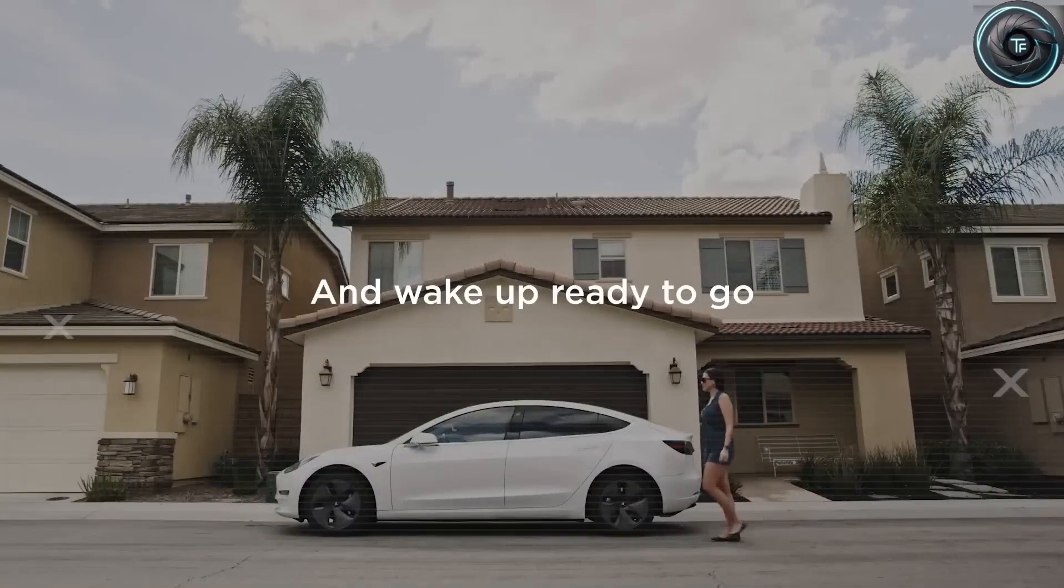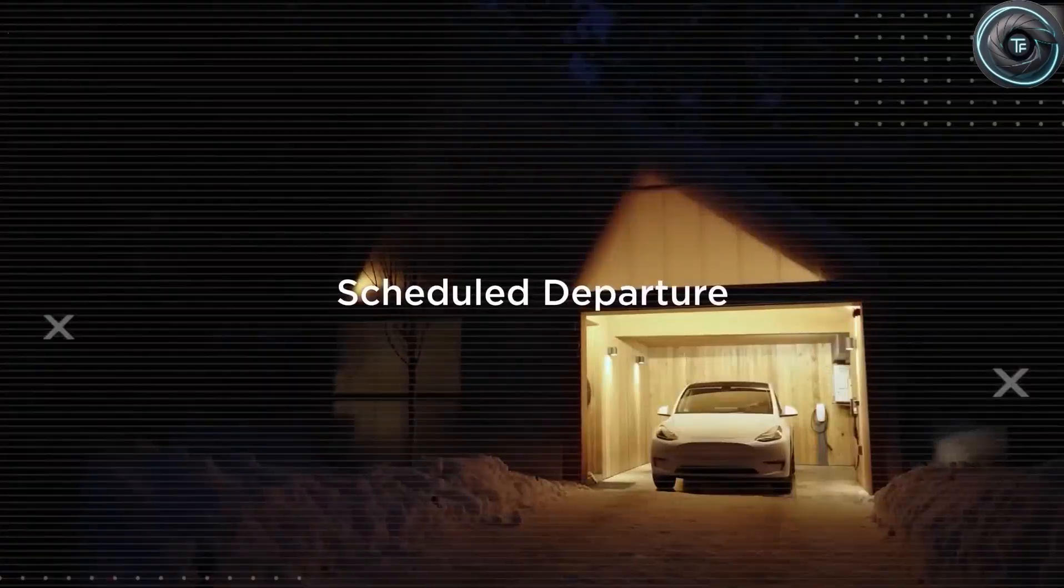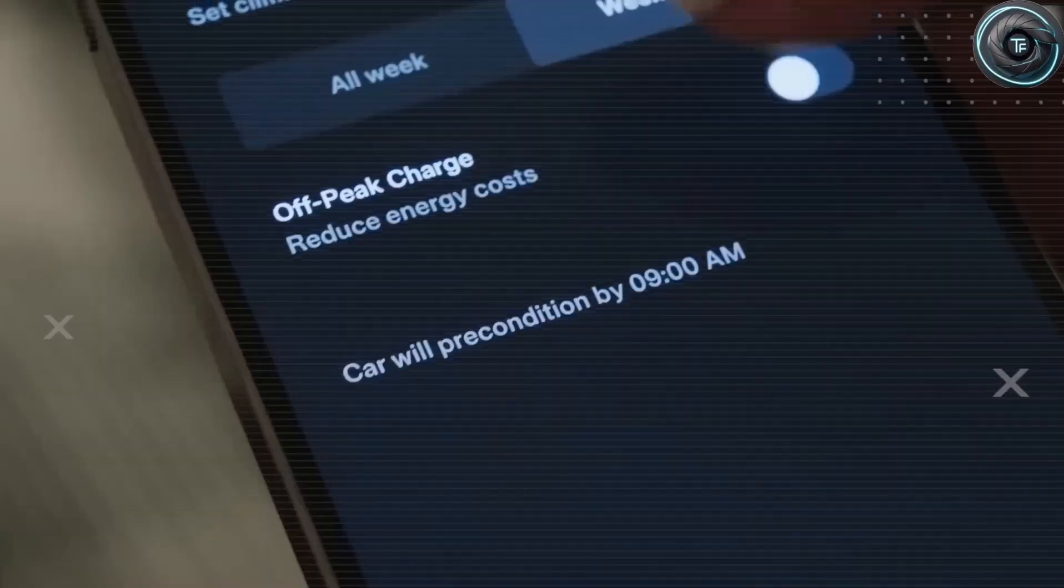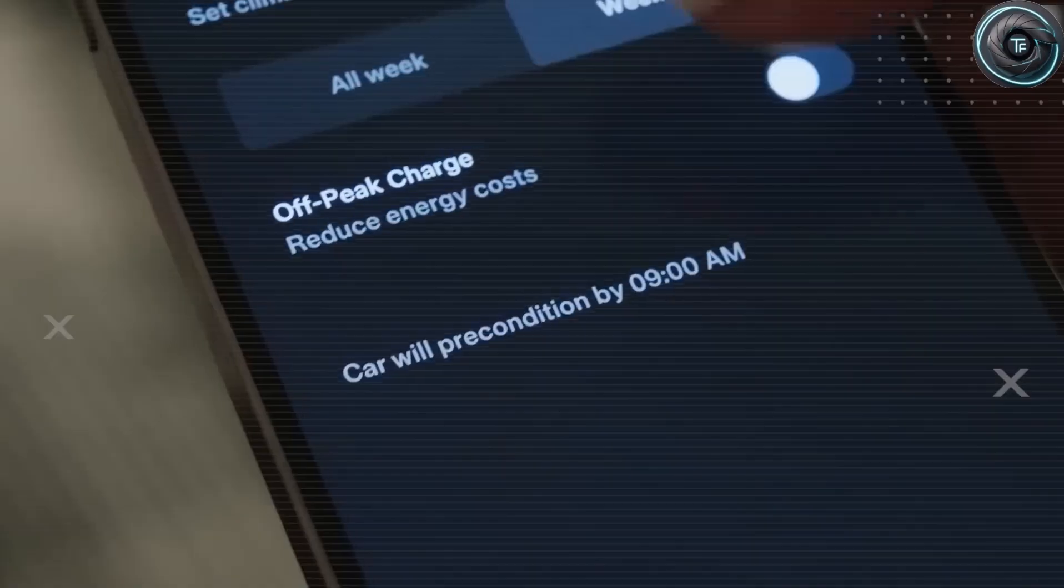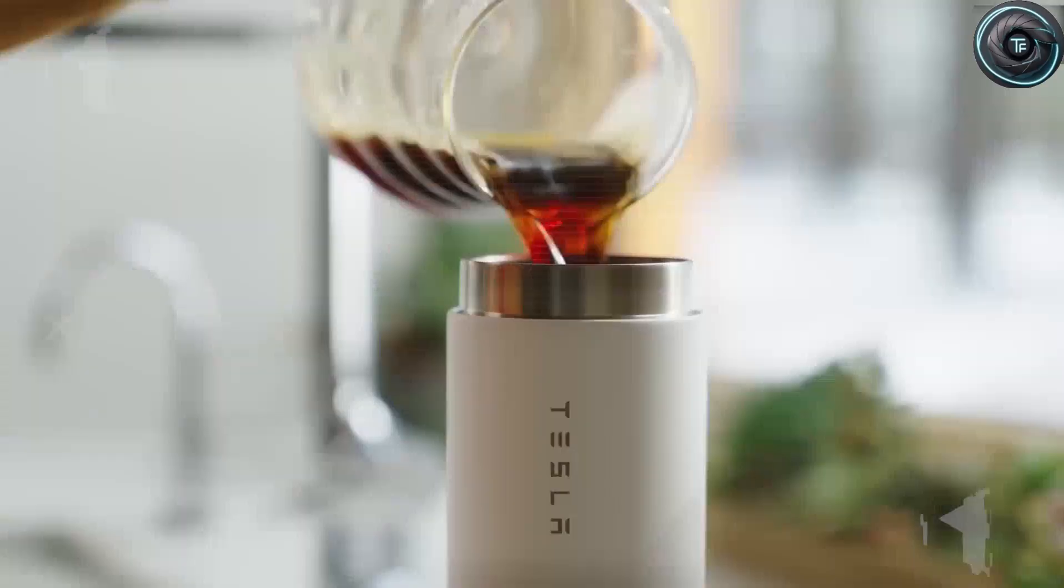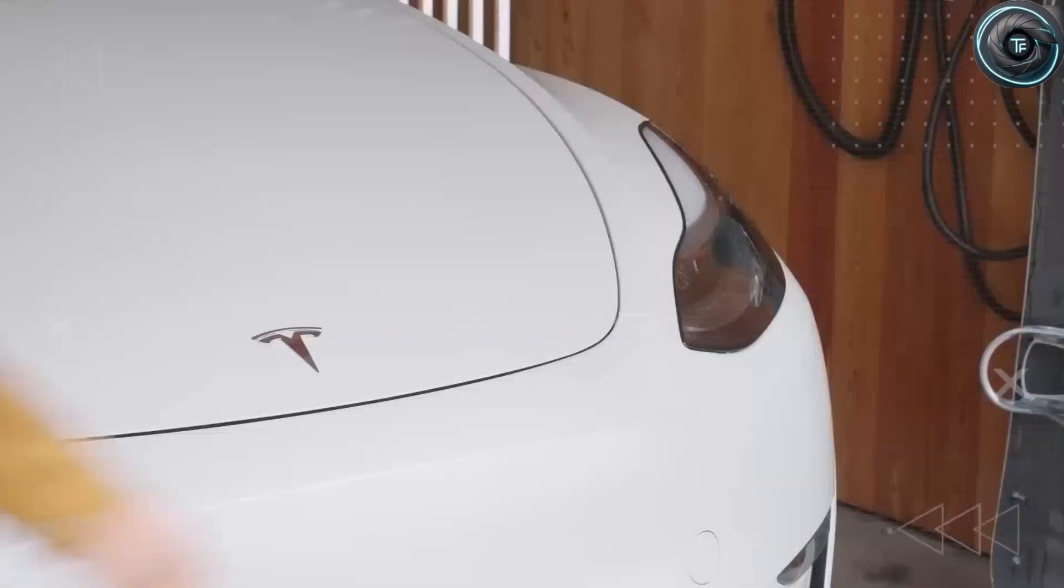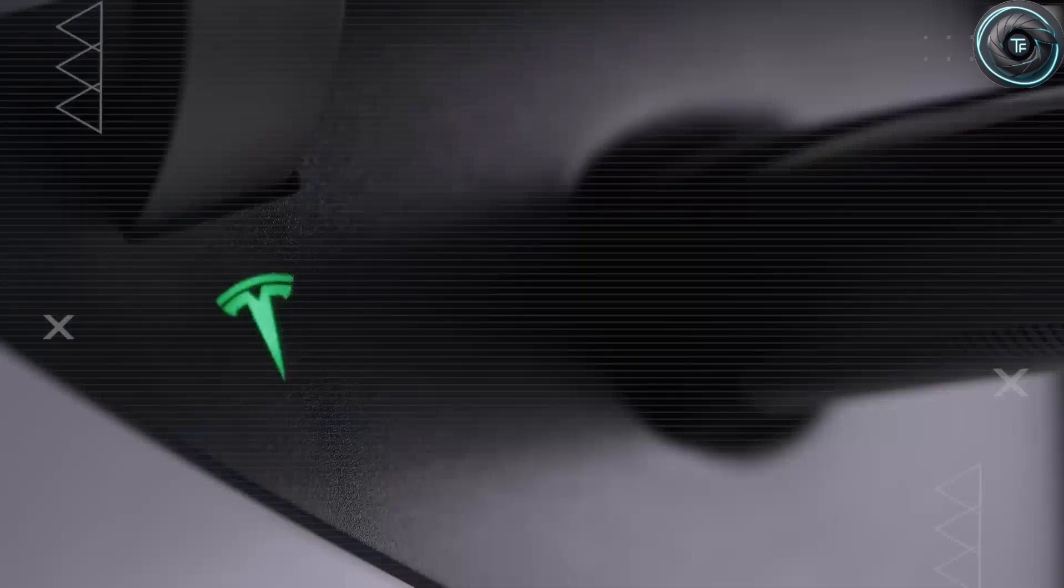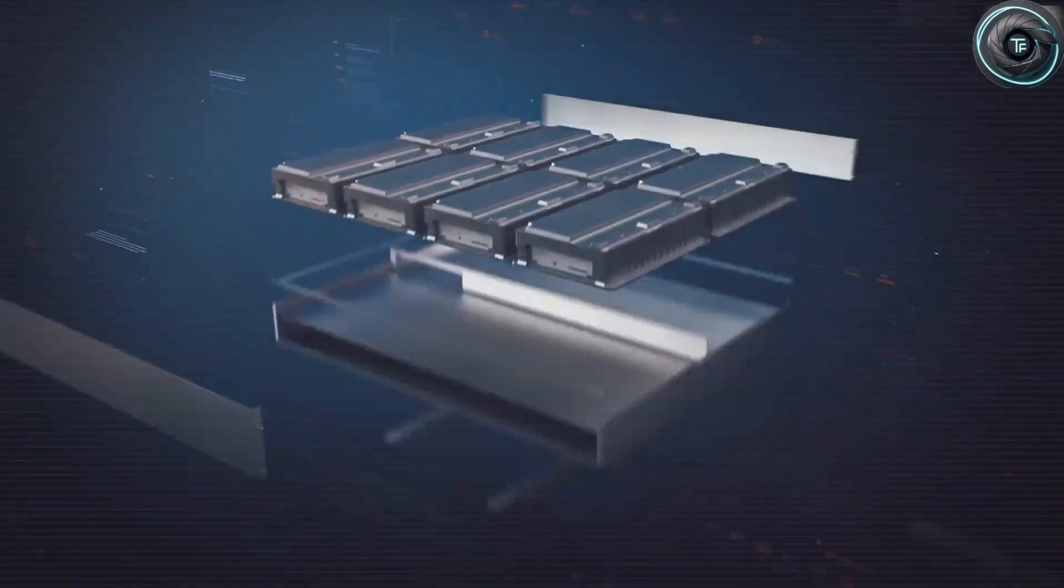Now picture this. It's 2026. You walk up to your Tesla Model 2, parked in your driveway. Its body glows faintly in the morning sun, built lighter thanks to advanced alloys that complement its aluminum ion heart. You tap the handle, the door slides open silently, and inside the car wakes, ready, full, and waiting. You plugged it in the night before, but it only took five minutes to recharge. No gas stations, no fumes, no noise—just pure silent power.